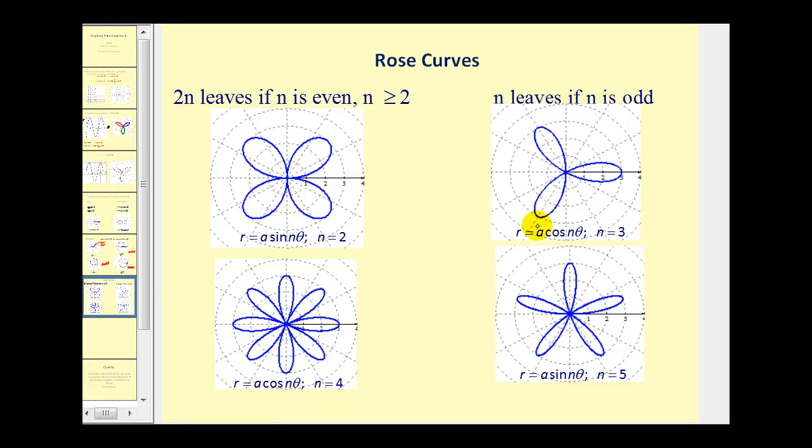So if we have r equals a cosine n theta, and r equals a sine n theta, where n is three, we have only three petals. And n is five, we have five petals. So if n is even, we actually double it to determine the number of leaves. And if n is odd, it tells us exactly how many leaves we have.